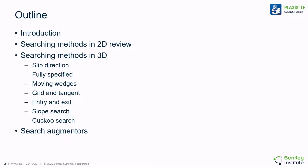To give a brief outline of the video today, we will give an introduction of searching in the context of a 3D model. We will particularly examine the extension of 2D searching methods to 3D. We will talk briefly about determining slip direction, which is now an additional parameter that needs to be determined in a 3D analysis. Then we will discuss fully specified searches for back analysis.